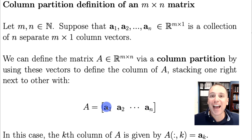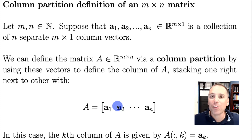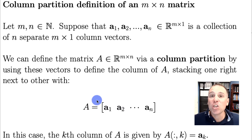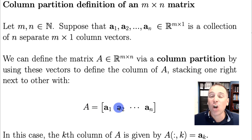Each column vector has M rows and one column. Placing A1 next to A2 gives M-by-2, adding A3 gives M-by-3, and continuing to the last column gives an M-by-N matrix. We are not referring to A using its most refined entry-by-entry version; instead, we're thinking about A as a collection of column vectors.